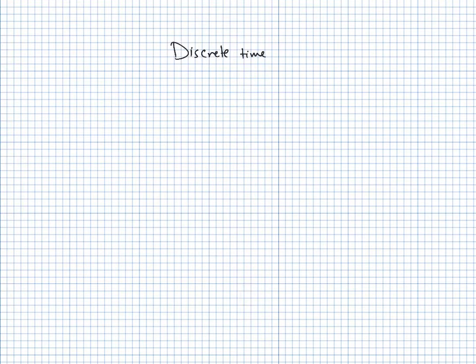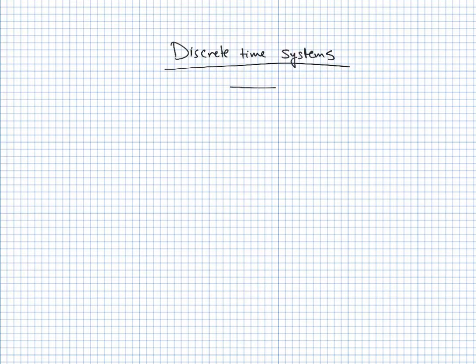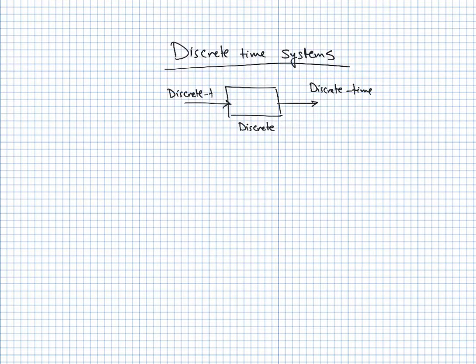A discrete time system is a block that takes an input and performs some operation to produce a particular output. A system is categorized as discrete time if both its input and output are discrete. Similarly, a continuous time system is one where both the input signal and the output signal are continuous.